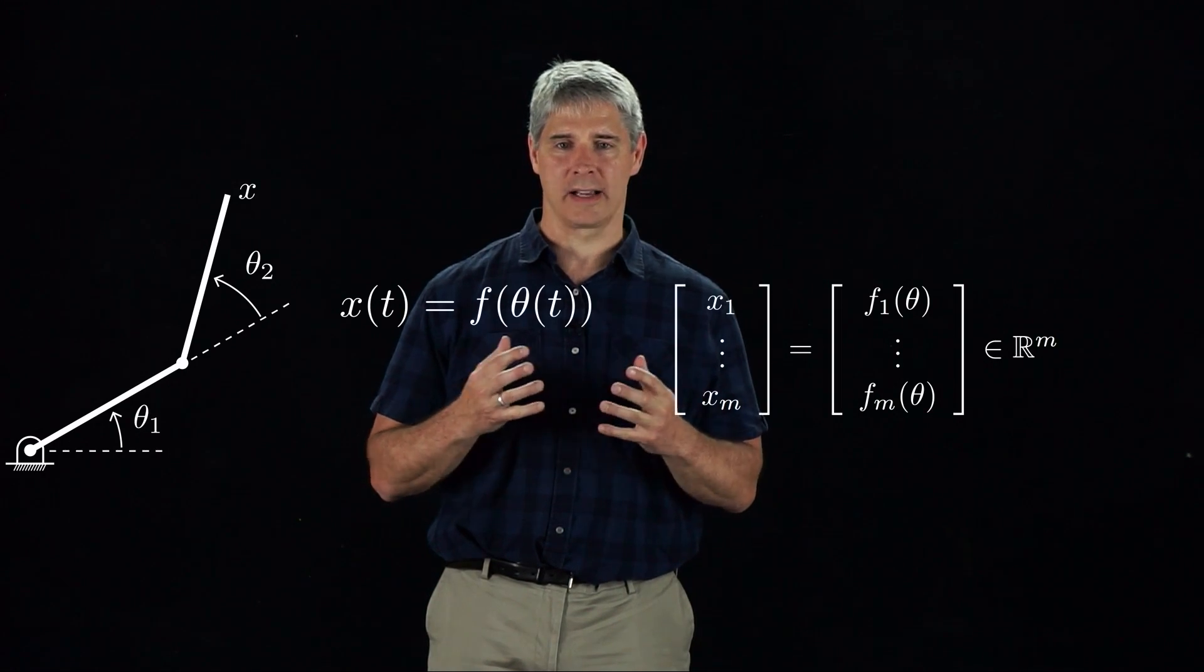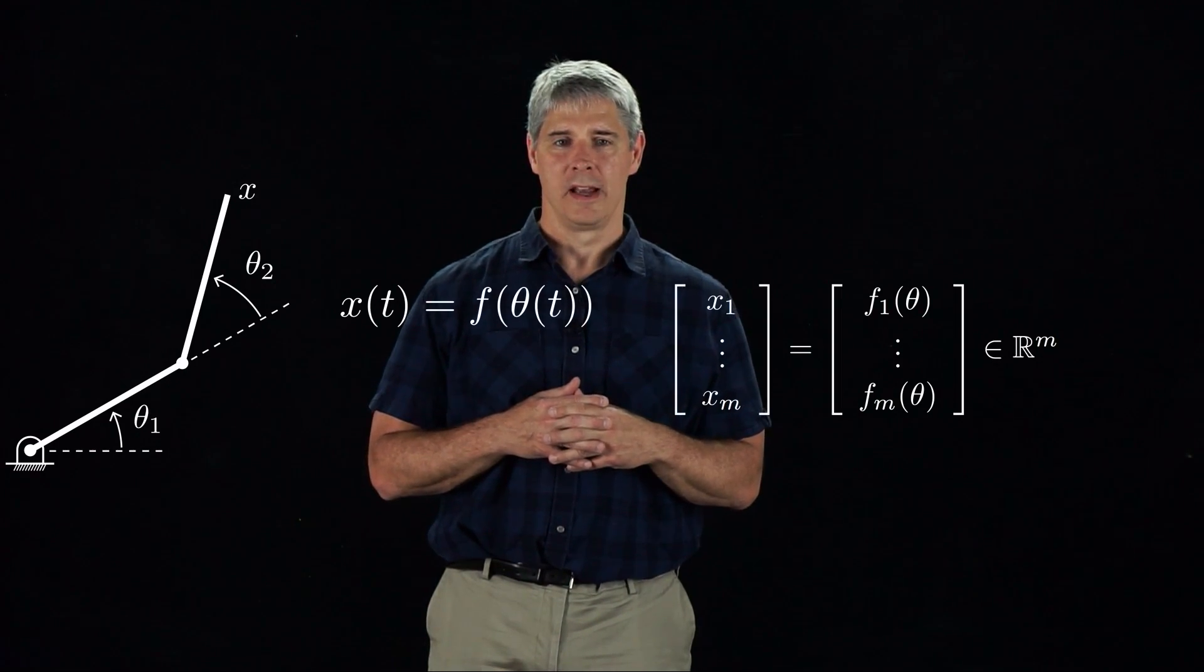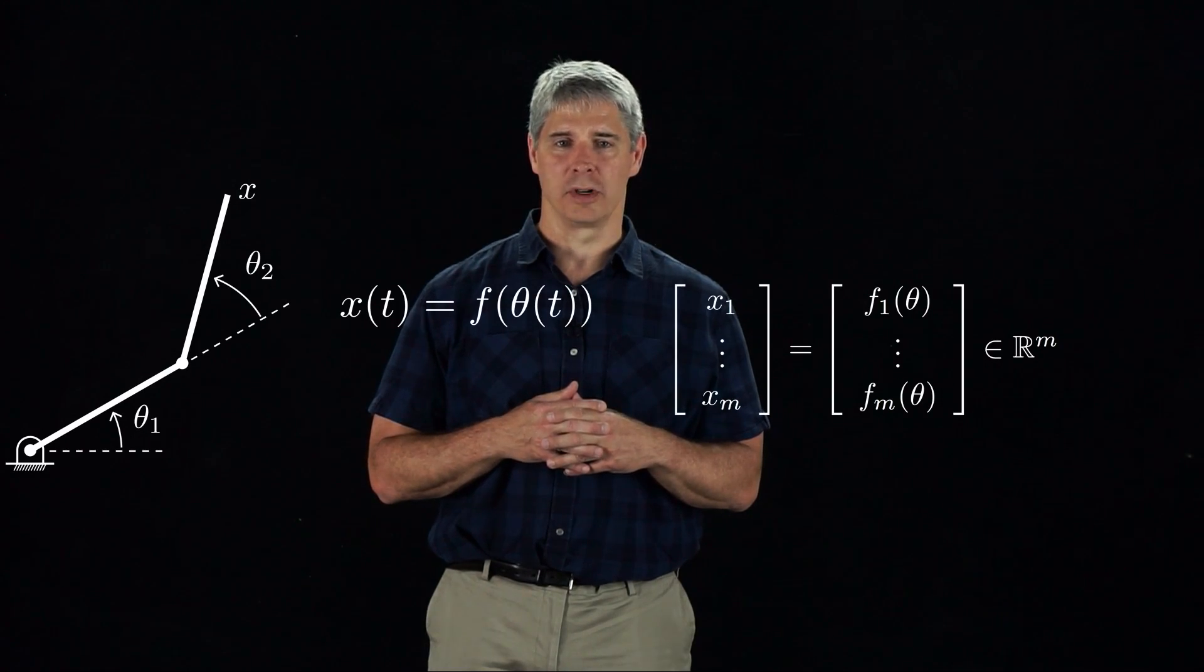Then the forward kinematics can be written x equals f of theta, where x is a vector of m coordinates representing the end effector configuration, and theta is an n vector of joint coordinates.